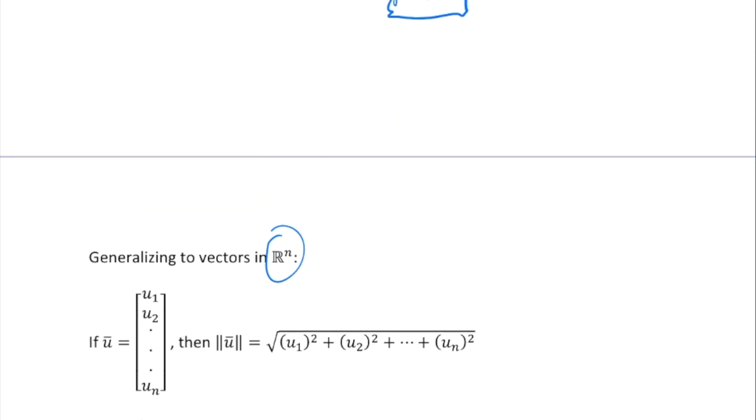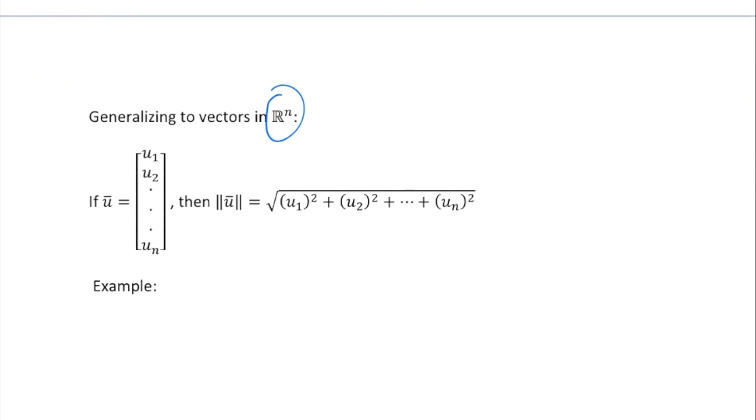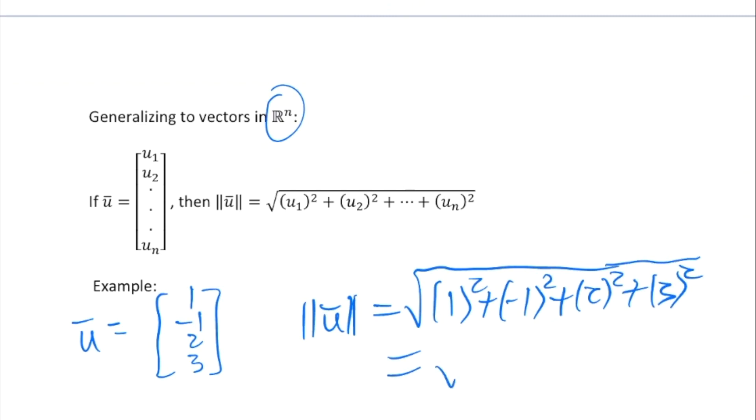Take a quick example in R⁴. Let's say I had the vector u is [1, -1, 2, 3]. Then the magnitude of u would be the square root of 1² + (-1)² + 2² + 3². The parentheses are vital for the negative one there. Put these together: 1 + 1 + 4 + 9, which is the square root of 15.